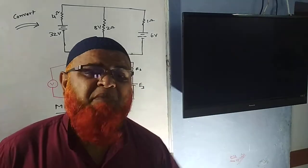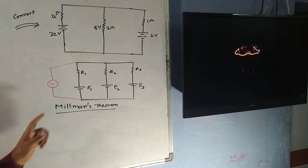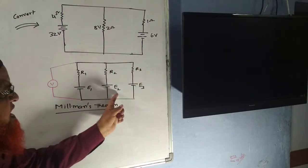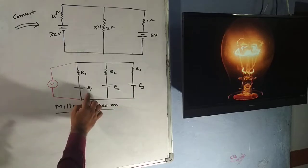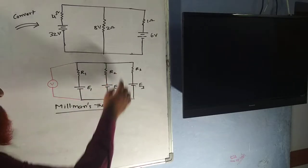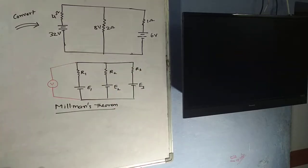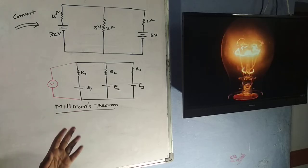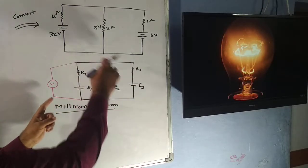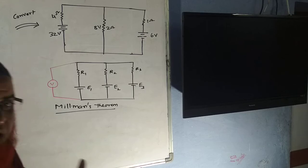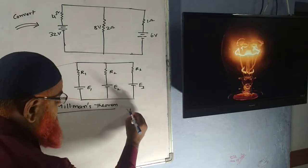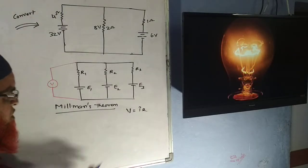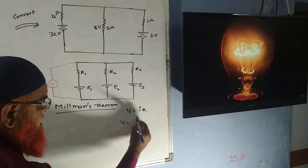I am discussing Millman's theorem, which will help you solve the problem in less than one minute. So let us discuss: what is Millman's theorem? Let us consider this complex circuit in which there are EMFs — three batteries connected here. One battery is connected to resistance R1, another battery connected to resistance R2, and another battery connected to resistance R3. How can you find the voltage across this type of complex circuit? There is one formula: according to Ohm's law, V is equal to IR.